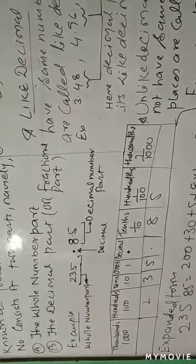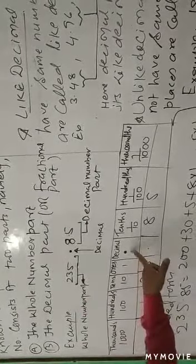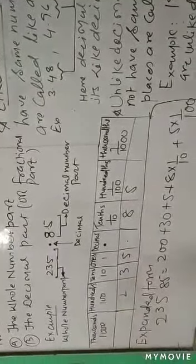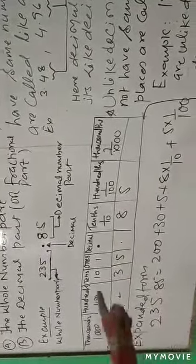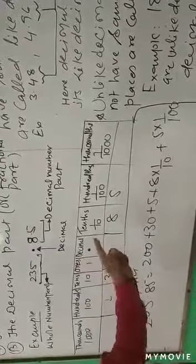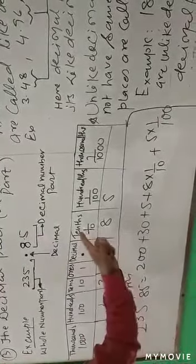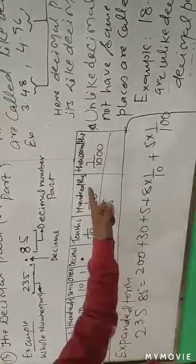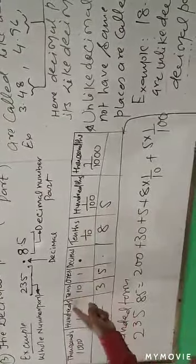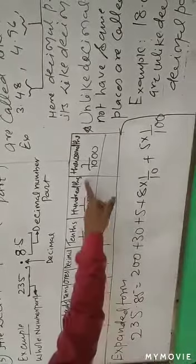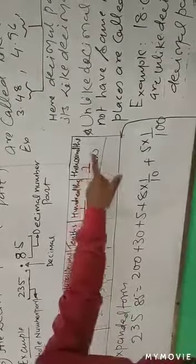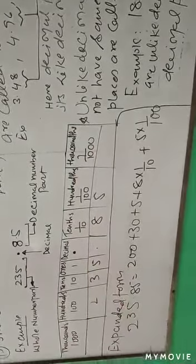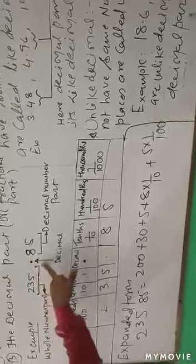Now this expansion — how to do this. So the decimal is here, and the place values go: ones, tens, hundreds, thousands, ten thousands, lakhs, ten lakhs. Now after the decimal point, the first place is tenths, then hundredths, then thousandths. So one by ten, one by hundred, one by thousand.